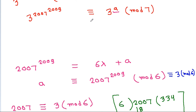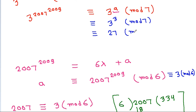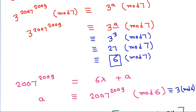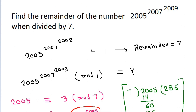So 3^a = 3^3 = 27. And 27 mod 7 is equivalent to 6 mod 7. Therefore, the remainder is 6.